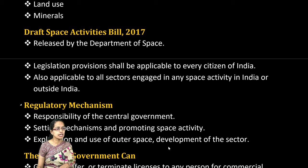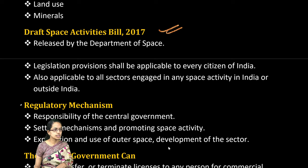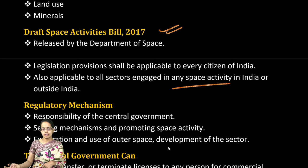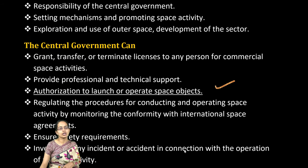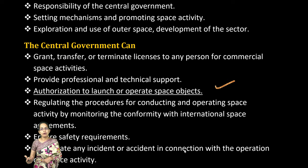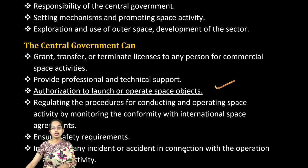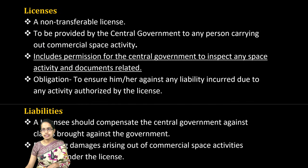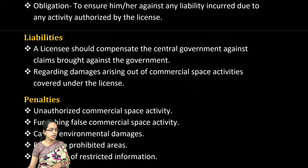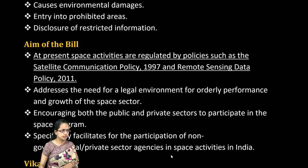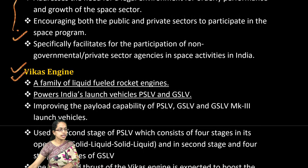The Draft Space Activities Bill 2017 is applicable to every citizen and all space activities in India. The central government's responsibilities include authorizing the launch and operation of space objects, developing professional and technical support, ensuring safety, and investigating any accidents. Licensing, including permission for the central government to inspect space activities, is important, and penalties are defined under this bill. The aim of the bill and how the Vikas engine works are also important.